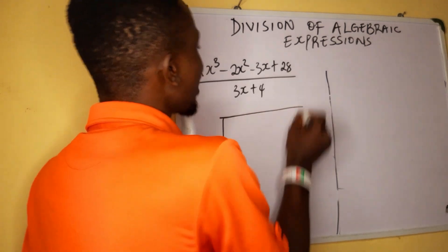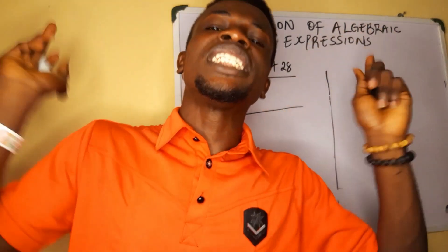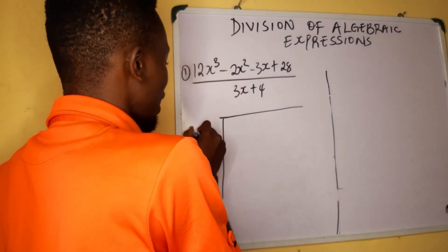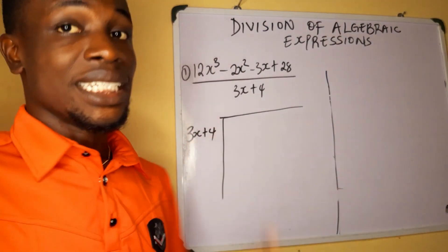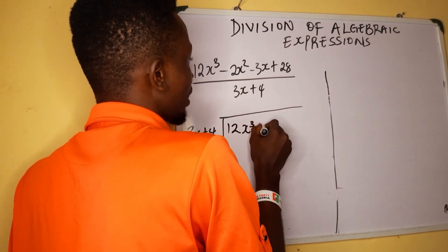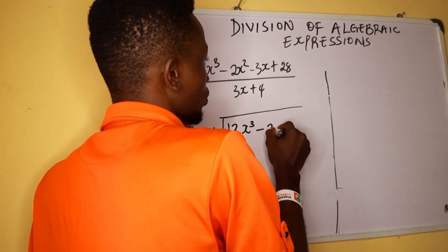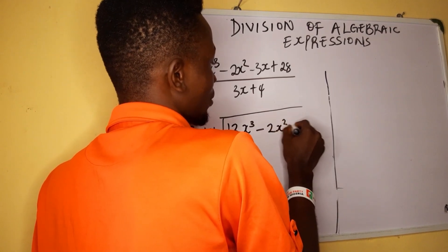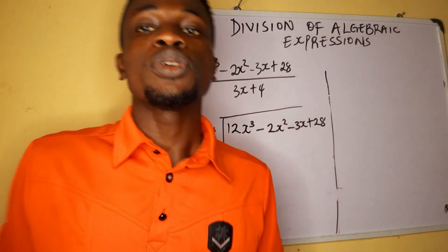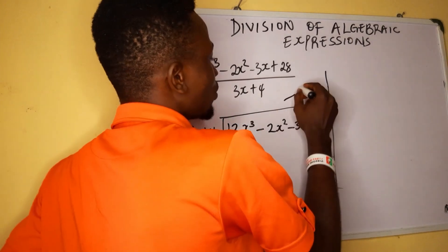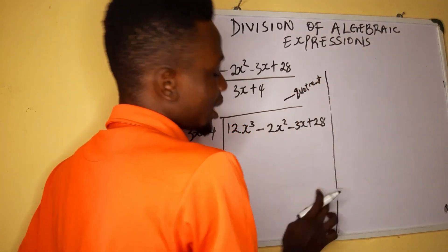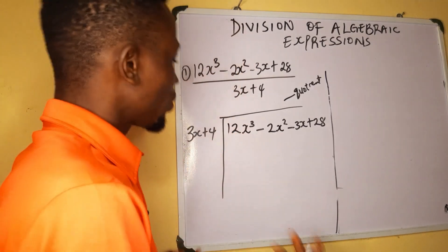To divide algebraic expressions, we're going to be employing the long division method. The divisor will be outside: 3x plus 4, and the dividend is going to be inside, which is 12x cubed minus 2x squared minus 3x plus 28. The answer on top will be called our quotient, and what remains will be the remainder. So, let's go.